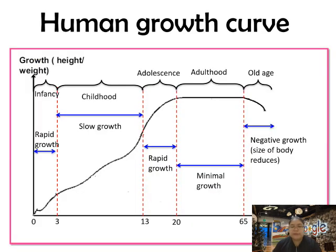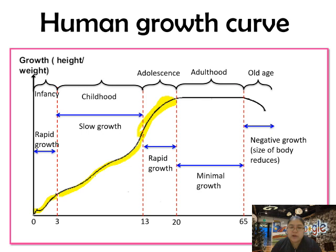When you plot the graph, it forms a curve. Growth is rapid during infancy, then goes down a little during childhood — not as fast as infancy. Then during adolescence it goes up again. In adulthood, when you are working and married, growth is constant. In old age there is negative growth — the size of the body reduces. This is called the human growth curve.